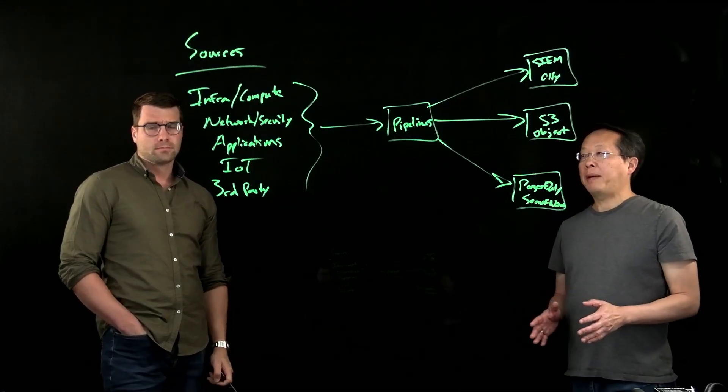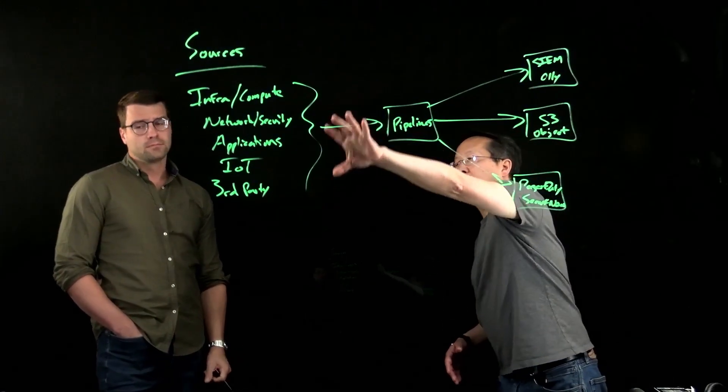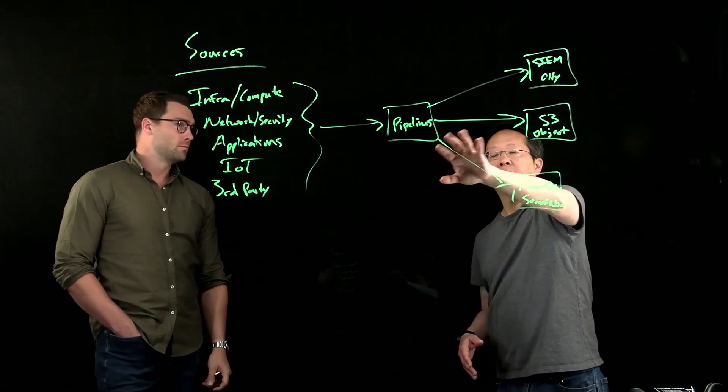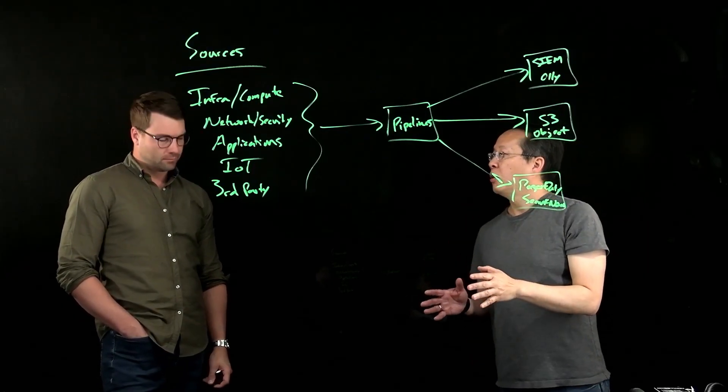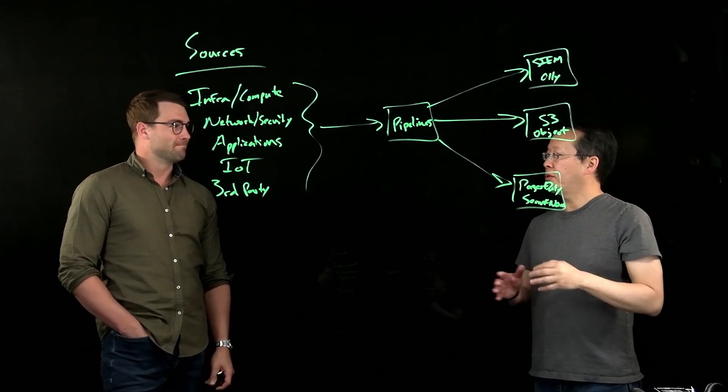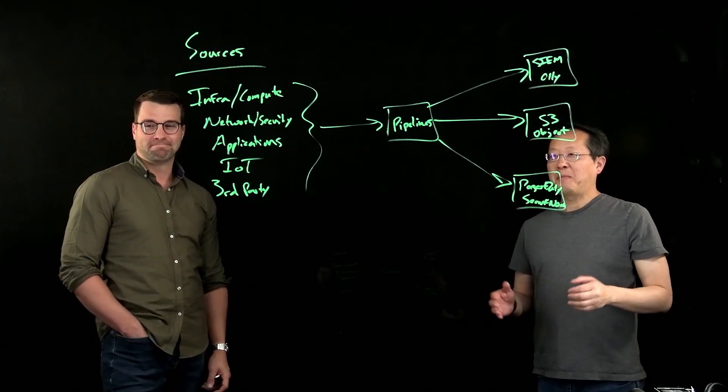So to summarize, a telemetry pipeline takes data from different sources and routes them to different types of destination, giving you more control over your security and observability data. Did I get that right? Yes. Thank you, Matt.